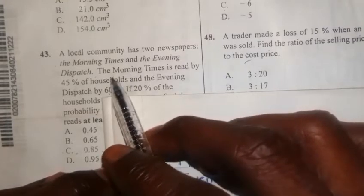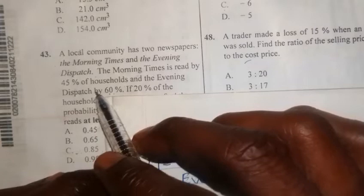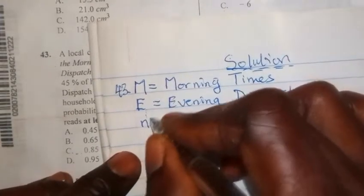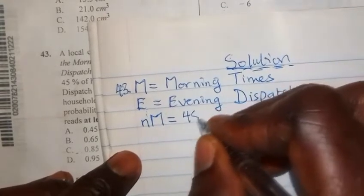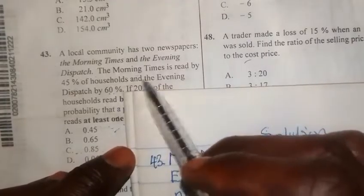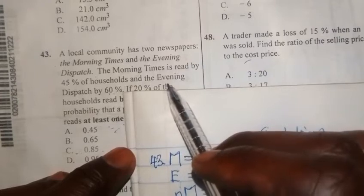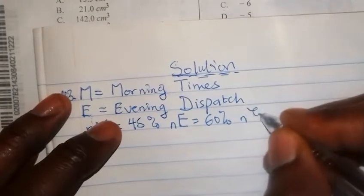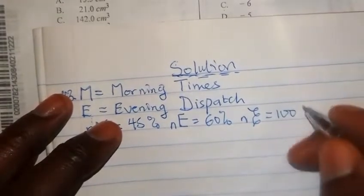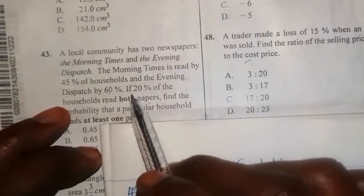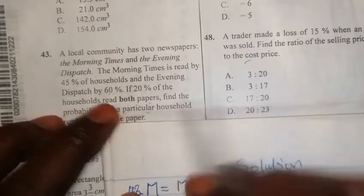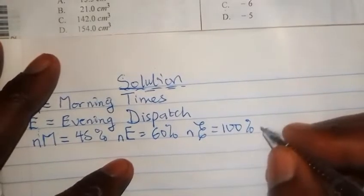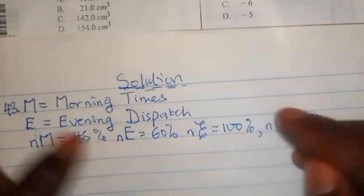From the question, the Morning Times is read by 45 percent of households, so n(M) = 45. The Evening Dispatch is read by 60 percent of households, so n(E) = 60. The total percentage, which gives the universal set, is 100 percent. We are also told that 20 percent of households read both papers.